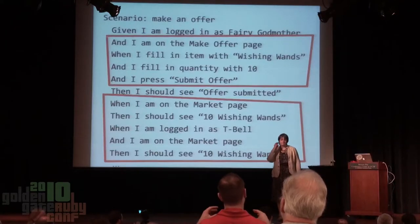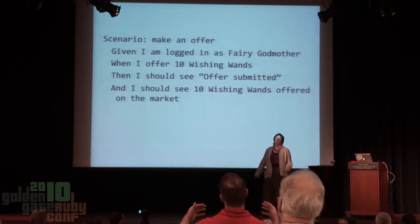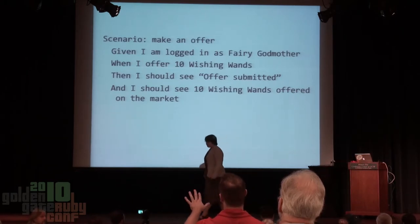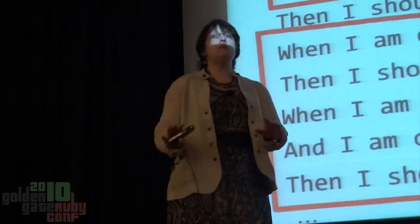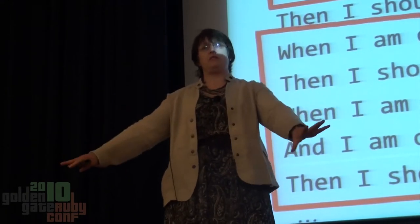Second question: about the first slides, the very long acceptance test versus the pared-down version. The short test puts trust in the developer — 'I want these two things to happen, I don't care how.' How do you balance customers who want very specific things specified, without the acceptance test becoming like the first example which is hard to read but very precise about what they want?